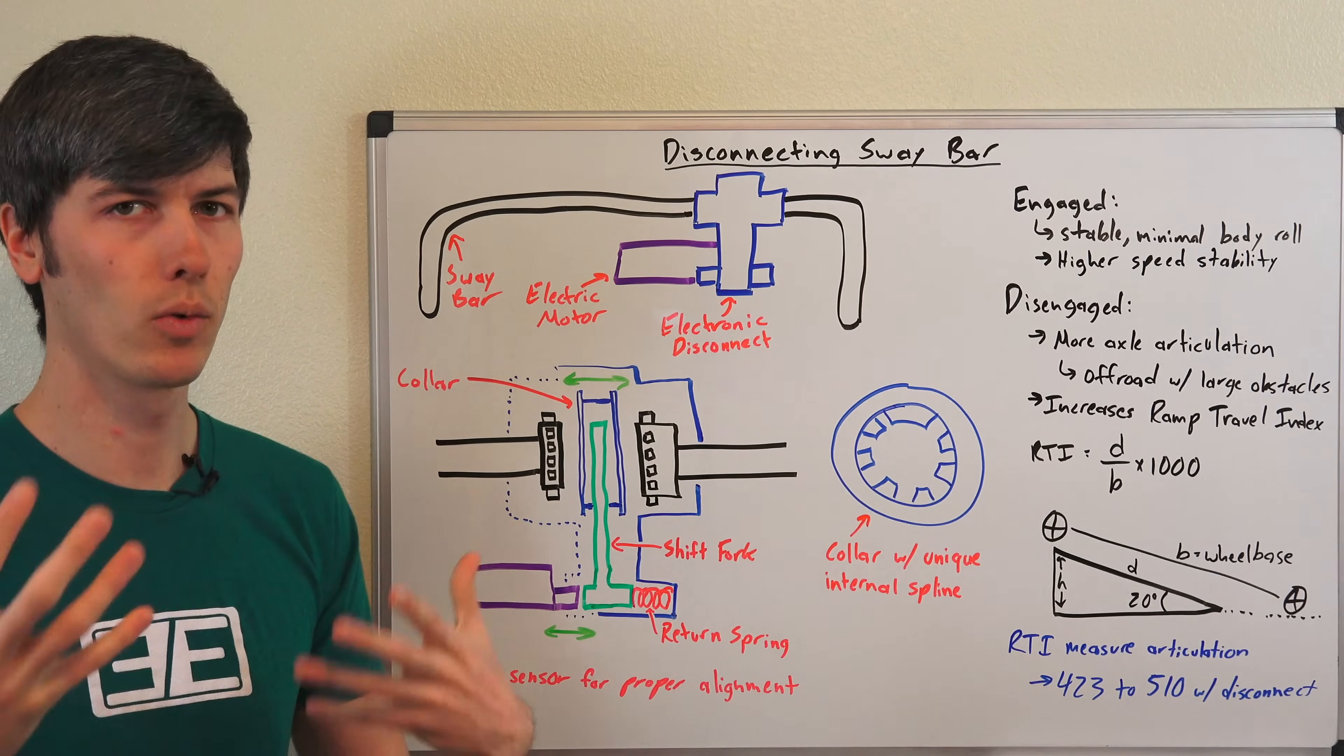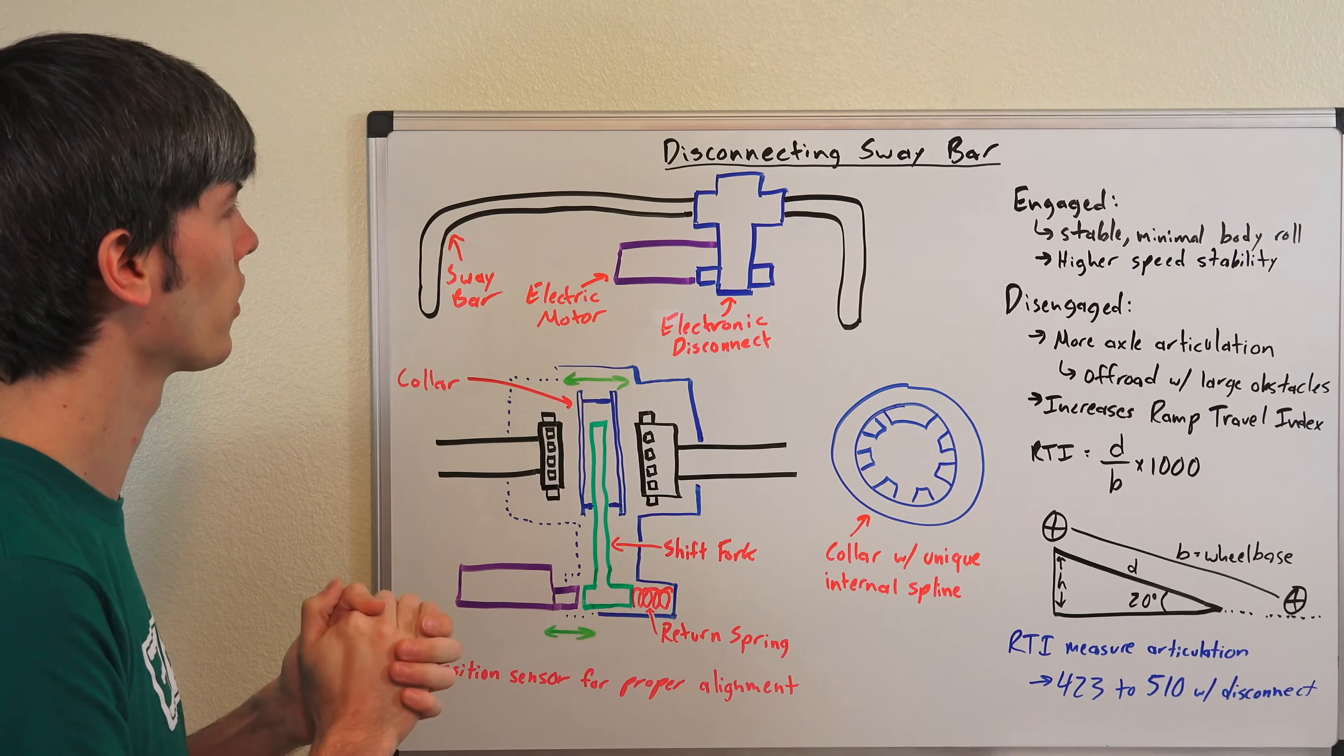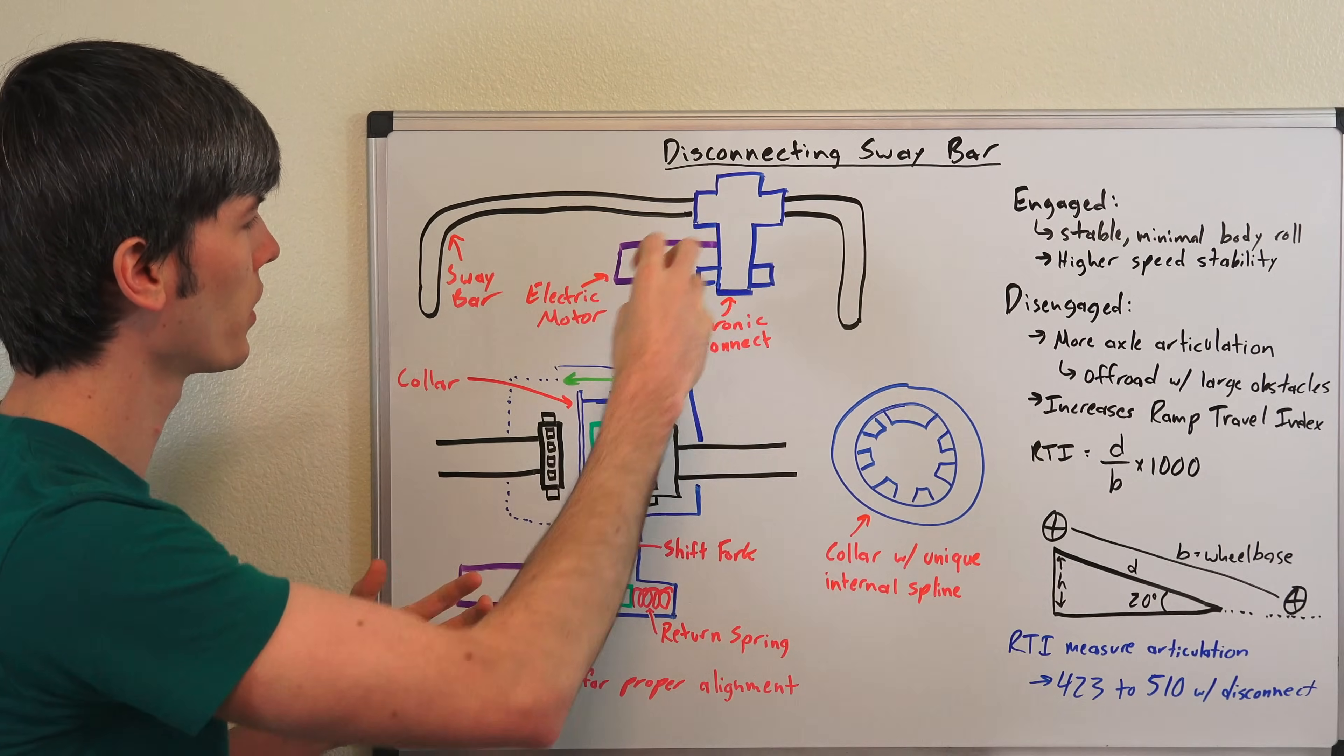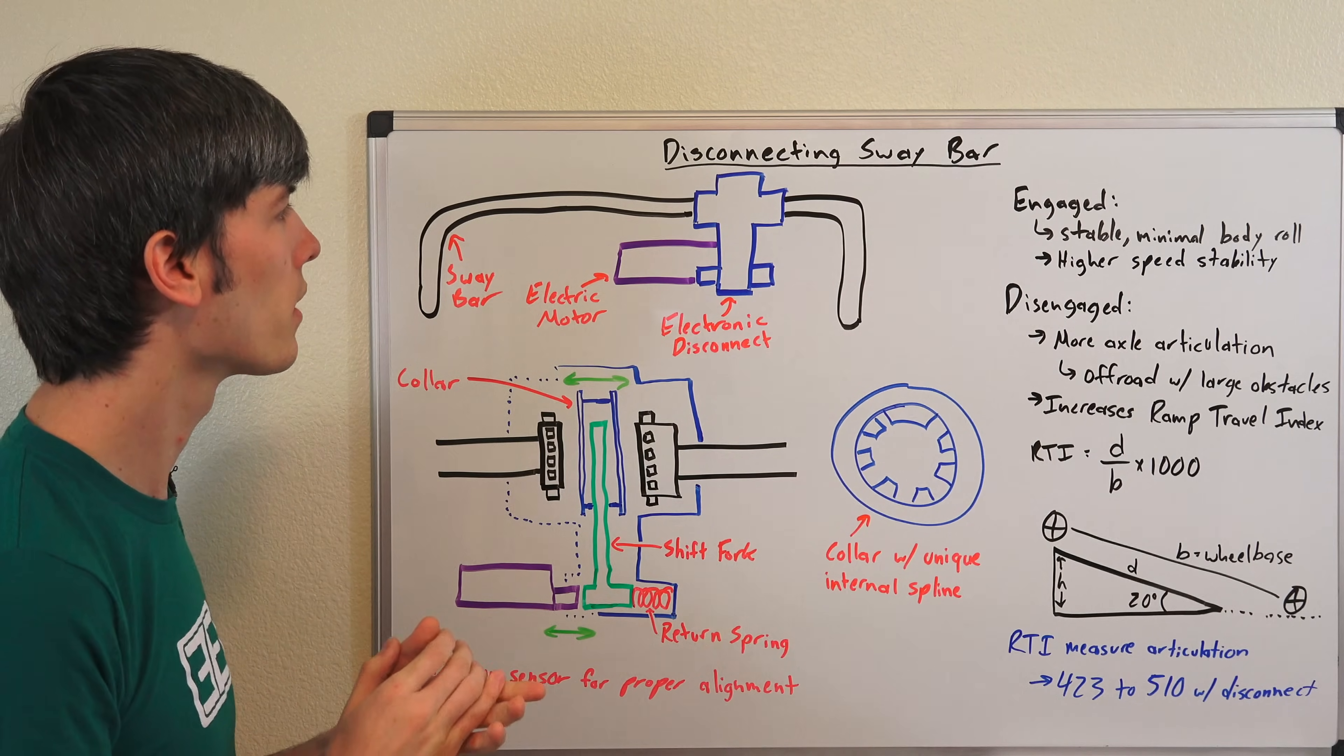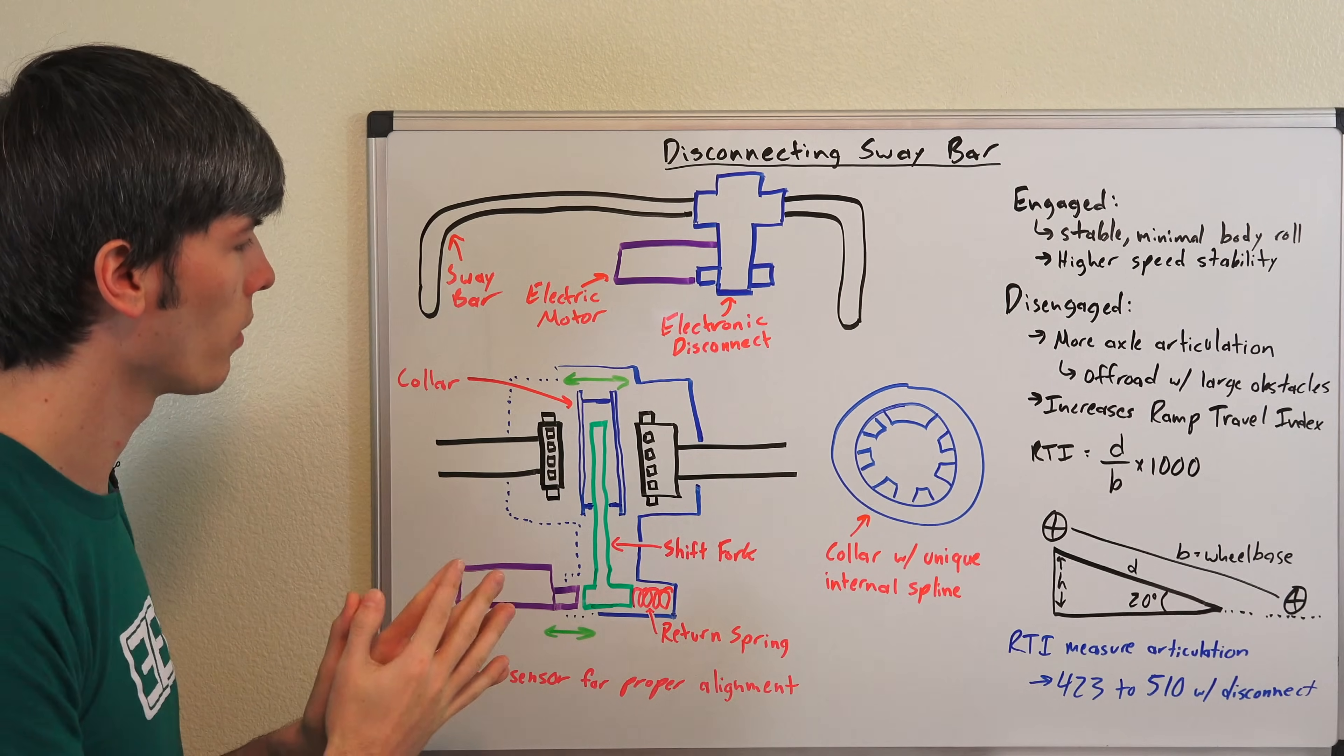So here we're looking at an electronic disconnecting sway bar. You've got the sway bar itself, you've got the disconnect portion, and then you've got the electric motor there which is going to actuate that disconnecting. And so looking inside of this here, kind of an exploded view of what's going on.